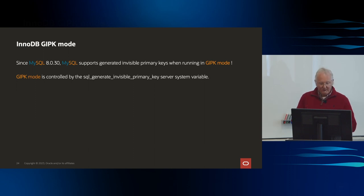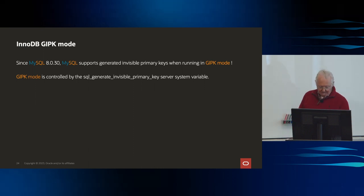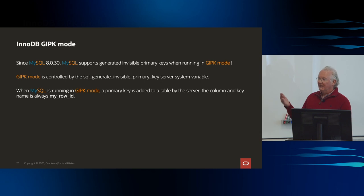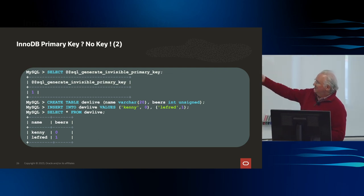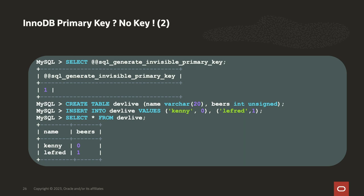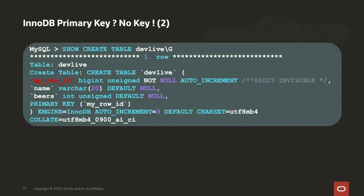We have a new mode called Generated Invisible Keys. Sometimes you don't have control over the schema, and so this will automatically generate keys for you — the primary key is just added to the table. If I create a table with just name and beers columns, and I show the table, I can see it has a row ID that was automatically generated. It's an auto-increment big int unsigned. If you're doing HA or DR, you have to have a primary key.